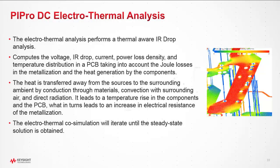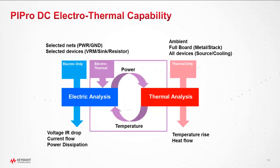In PI Pro DC electrothermal analysis, we perform a thermal-aware IR drop which computes voltage IR drop, current, power loss density, and temperature distribution in a PCB, taking into account joule loss in the metallization and heat generation by components. Heat is transferred from sources to the surrounding ambient by conduction through materials, convection with surrounding air, and direct radiation, leading to a temperature rise which in turn increases electrical resistance.